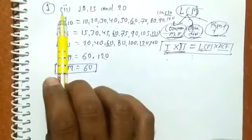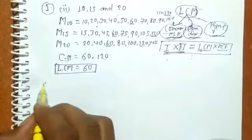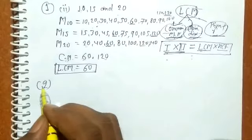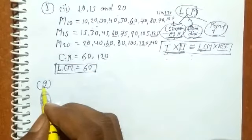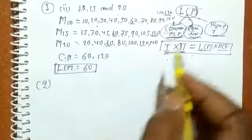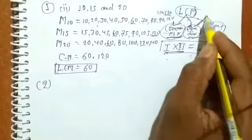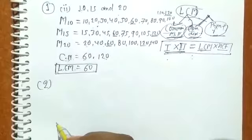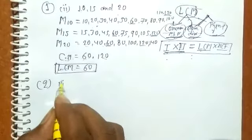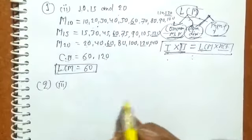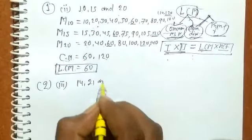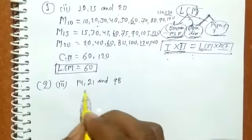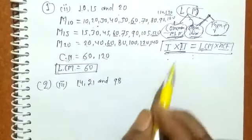In the common multiple method: first find the multiples of all numbers, then find which multiples are common, and then identify which is the least — that is the LCM. The LCM of 10, 15, and 20 is 60. This is the solution of question one, part two. Remaining parts you will solve by yourself. Now, question number two: find the LCM of each of the following groups of numbers using the prime factor method and the common division method. I will solve part three: 14, 21, and 98.